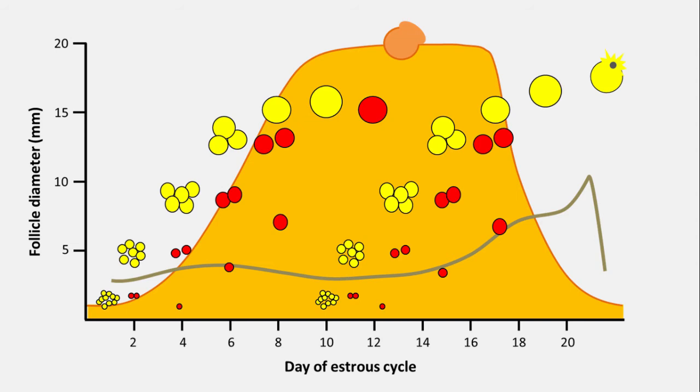So back to the diagram. We have a 21-day estrus cycle on average, with follicles developing and regressing throughout. Progesterone, represented with orange, prepares the uterus for pregnancy and limits development of follicles on the ovaries for most of the cycle. But when the CL regresses and progesterone declines, that is the moment when a follicle can really take off, producing more and more estrogen, represented by the brown line, which causes estrus.